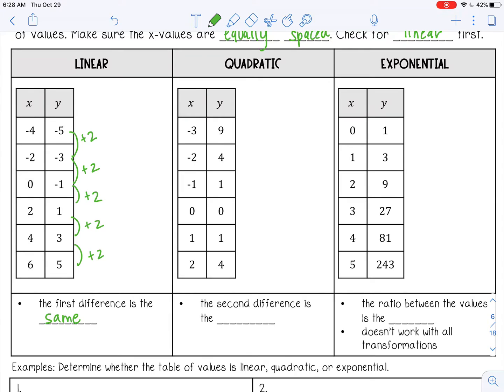All right, let's look at the quadratic. Let's make sure our x values are evenly spaced: negative 3, negative 2, negative 1, 0, 1, 2. Yep. So let's see what I need to add or subtract to get from 9 to 4. Well, from 9 to 4, that's minus 5.